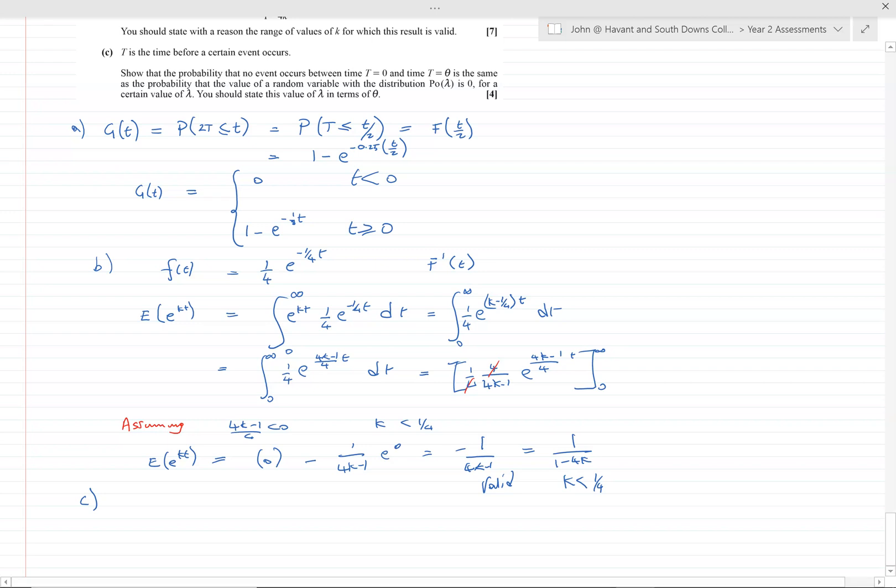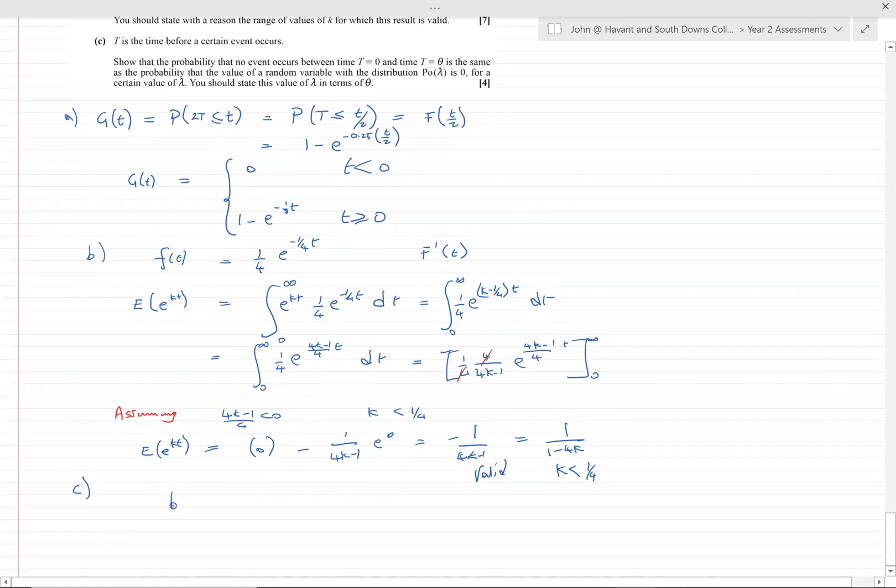So what we do, let's just write our cumulative distribution again. F(θ) is equal to 1 minus e to the minus quarter θ, that's F(t), that's just writing that out again.